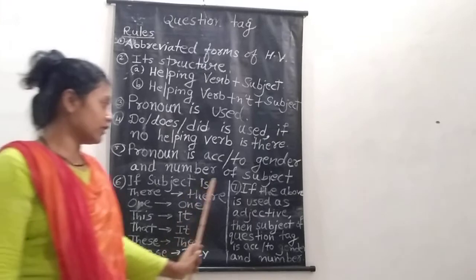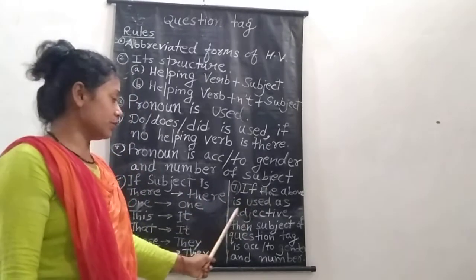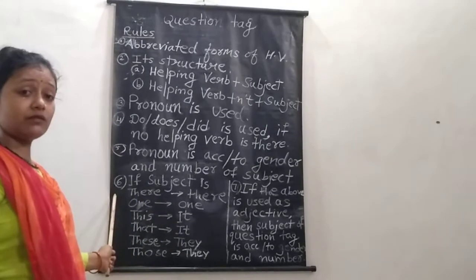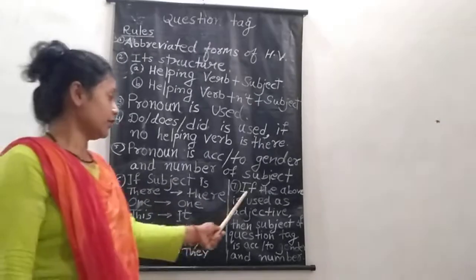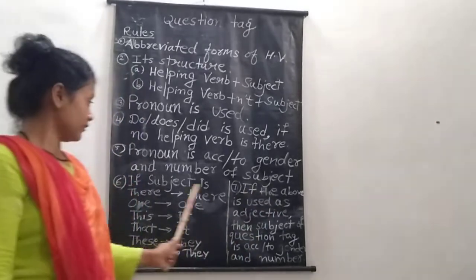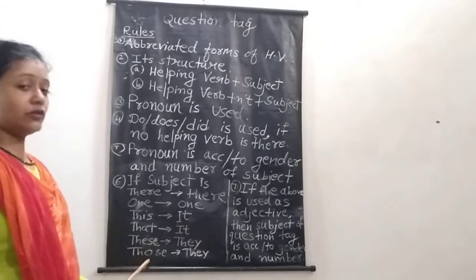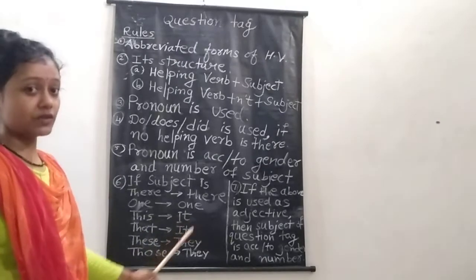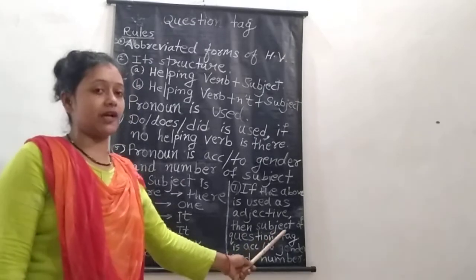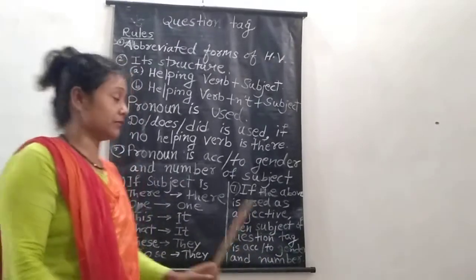Rule 7: If the subjects from Rule 6 — 'one', 'this', 'that', 'these', and 'those' — are used as adjectives, then the subject of the question tag is chosen according to the gender and number of the noun they modify.